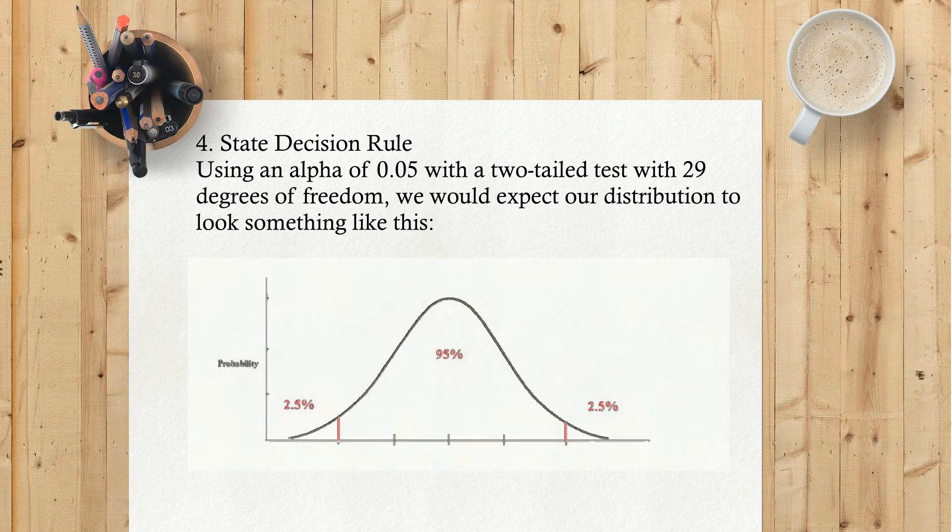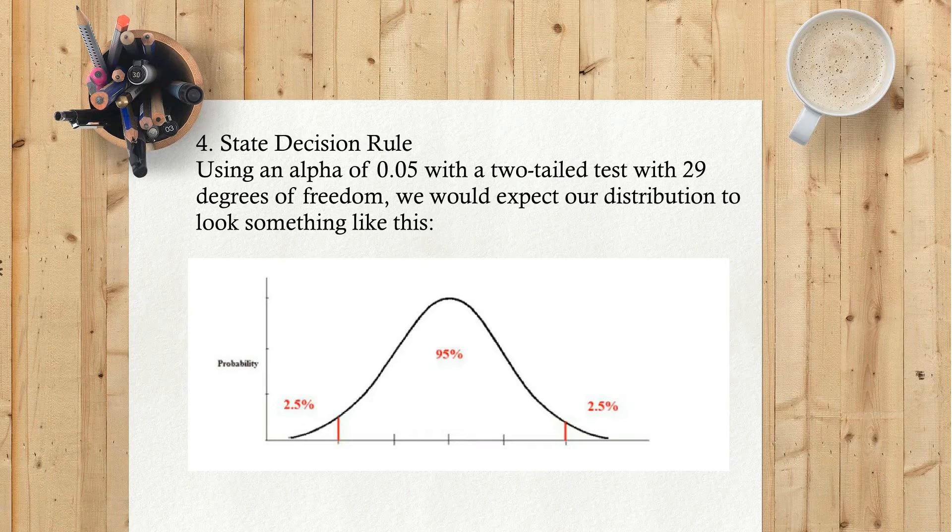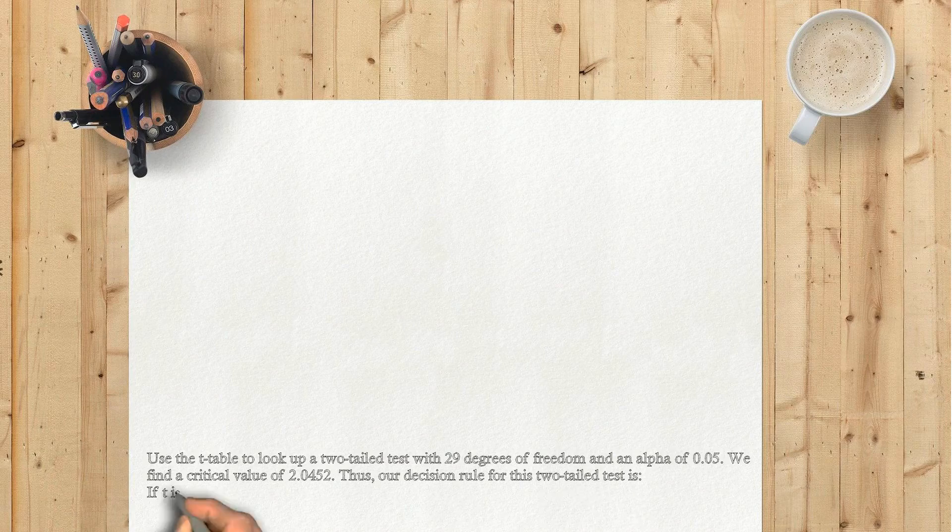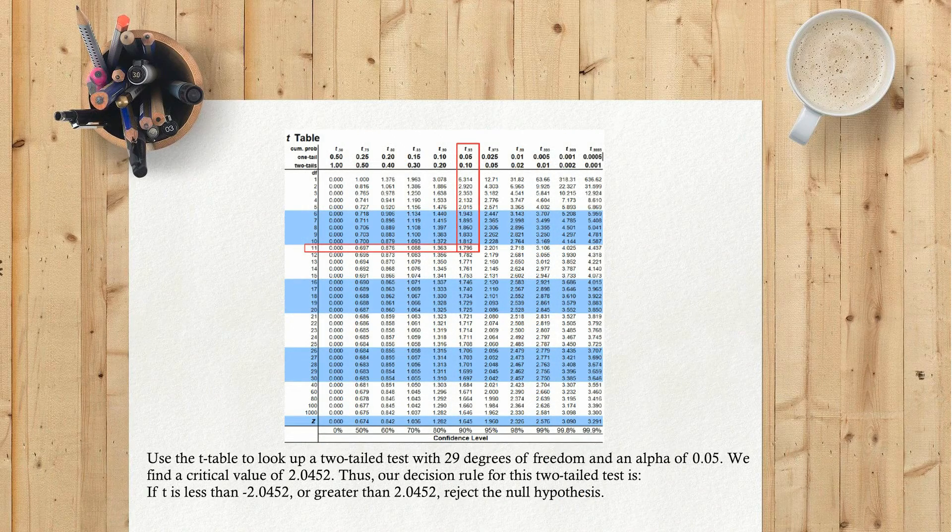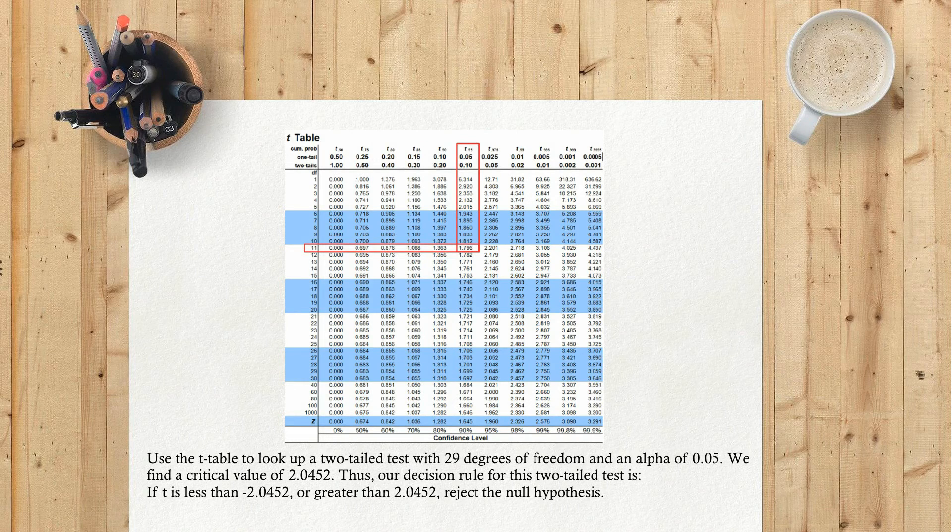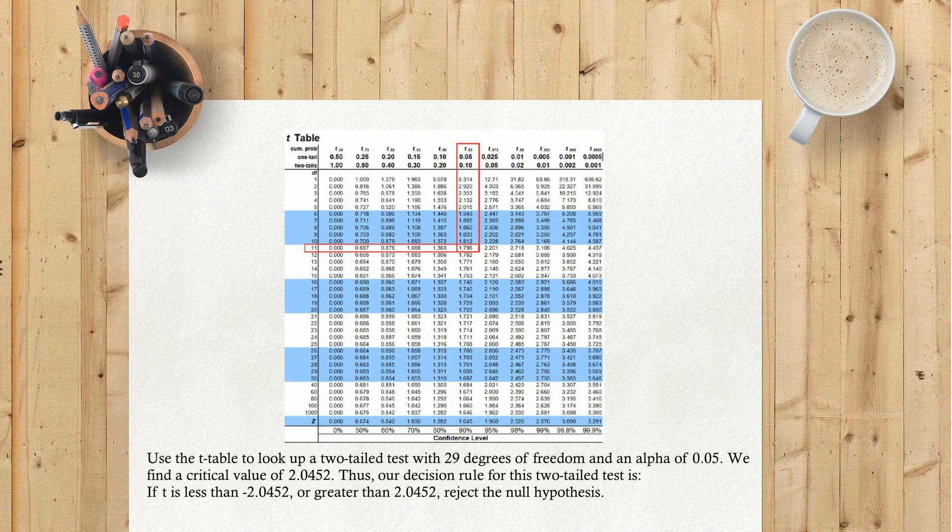4) State decision rule. Using an alpha of 0.05 with a two-tailed test with 29 degrees of freedom, we would expect our distribution to look something like this. Use the t table to look up a two-tailed test with 29 degrees of freedom and an alpha of 0.05. We find a critical value of 2.0452. Thus our decision rule for this two-tailed test is: if t is less than minus 2.0452 or greater than 2.0452, reject the null hypothesis.